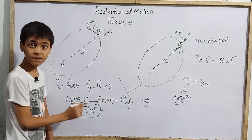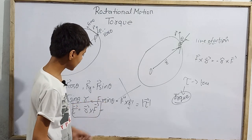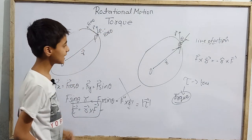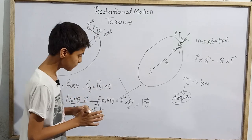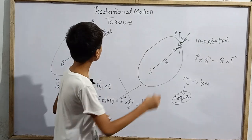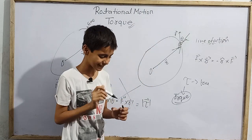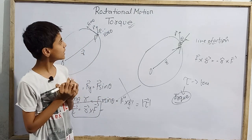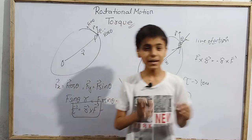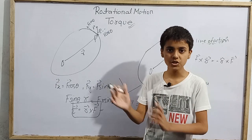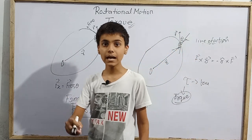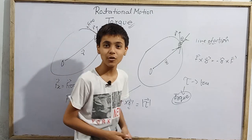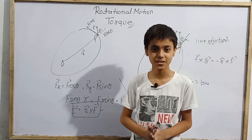This is called the line of action, and if we take R perpendicular, that is R sin theta, that is called the moment arm of this force F vector. That is what we actually needed to know in torque and rotational motion. We will also be doing rolling motion soon. Hope you liked and enjoyed today's video, and thanks to all for watching. Jai Hind, Jai Bharat.